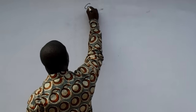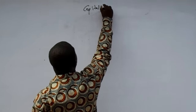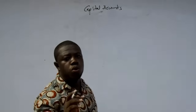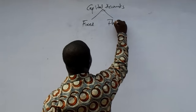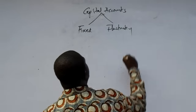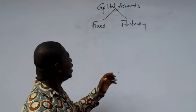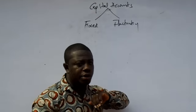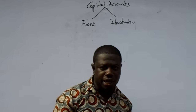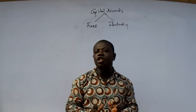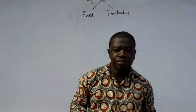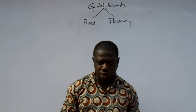When we look at the capital accounts for the partnership, there are two main broad classifications. We have the fixed capital accounts and then the fluctuating capital accounts. A partnership business can decide to maintain either the fixed capital accounts or the fluctuating capital accounts. The fixed capital account means that there will be no changes to the initial capital that has been contributed by the partners in the capital accounts.